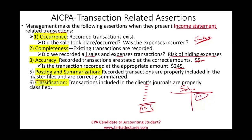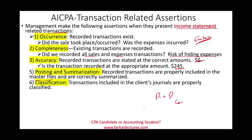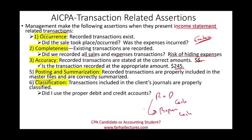Classification: transactions included in the client's journals are properly classified. For example, when we process a transaction and it's R&D, we debit R&D and credit cash — not debit repair and credit cash, because this is an R&D expense. If we debited repair, it's misclassified; we did not use the proper debit and credit.